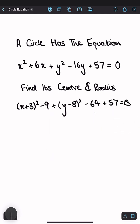Now if we do minus 9 minus 64 plus 57, we get negative 16. So x plus 3 squared plus y minus 8 squared minus 16 equals 0.